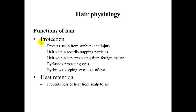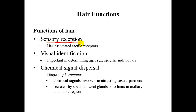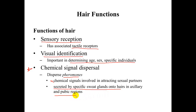The functions of hair include protection: it protects the scalp from sunburn and injury, traps particles or foreign matter in the nostrils and ears, and the eyelashes help keep particles out of the eyes while eyebrows help keep sweat out. Hair also functions in heat retention, preventing heat loss from the scalp. Additionally, it provides sensory reception through tactile receptors, visual identification for determining age, sex, or individuals, and chemical signal dispersal in the form of pheromones — chemical signals involved in attracting sexual partners, secreted by specific sweat glands into hairs in axillary and pubic regions.